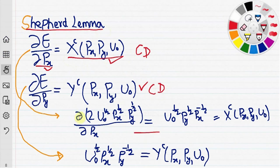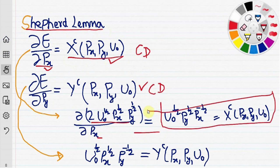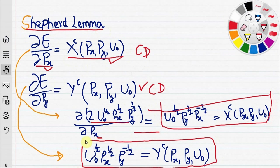This can be verified with our example. The expenditure function is 2 times u0^(1/2) times px^(1/2) times py^(1/2). If we partially differentiate with respect to px, we get the compensated demand for x commodity. And if we differentiate E with respect to py, we get the compensated demand for y commodity.